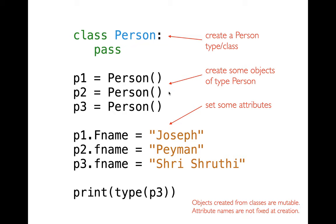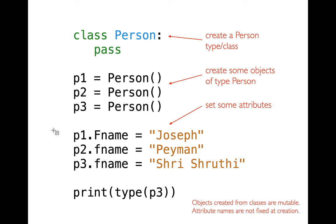The way I create person objects from the Person type or class is I say the type name 'Person' and then put parentheses after. It's really a lot like a function call — I can almost think of it as a function I'm calling and it's returning a new object to me, a new person object. And then after that, I can add some information to it.